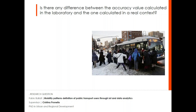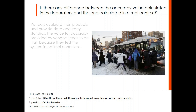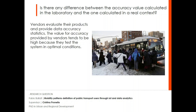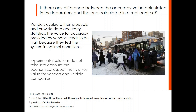To better understand the actual functioning of these systems, some considerations arise. A key aspect is that vendors often evaluate their own product accuracy statistics. However, the accuracy values provided by vendors tend to be high because they test the system in optimal conditions. In addition, experimental solutions often do not take into account the economical aspects, which is a key value for vendors and the transport companies.